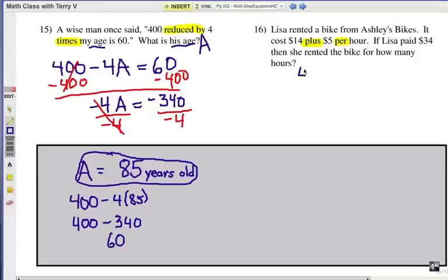All right, if we translate this into an equation, it says $14 plus $5 per hour. And although per sometimes means division, in this case, if it's a cost of something per hour, that's multiplication. So let's go ahead and say R is the rental for hours.